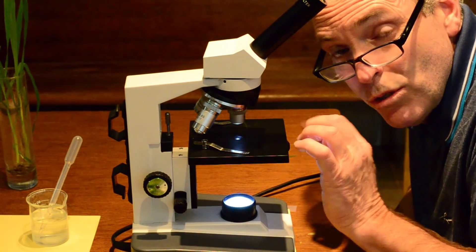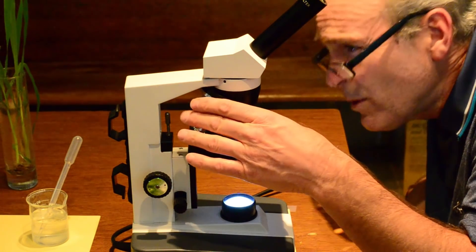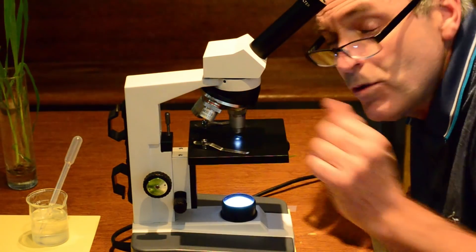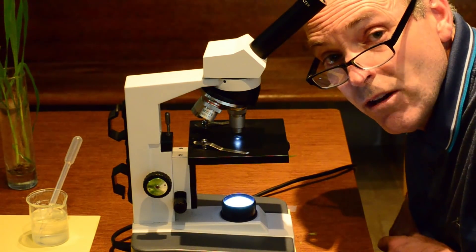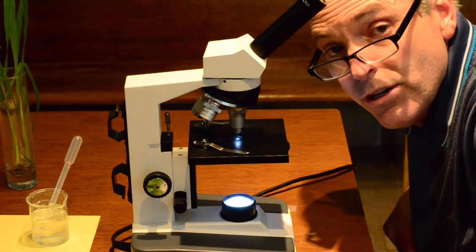We're probably only going to use the low power, the red. And we'll need to switch to the yellow, which is the medium power. Those are the two powers that we're going to use today. We start off with your coarse adjustment knob. And then you can go to your fine adjustment knob.